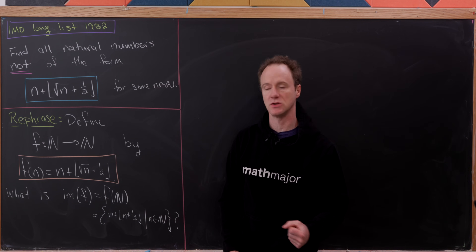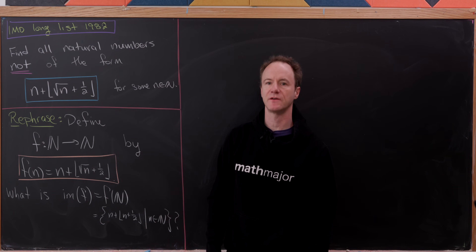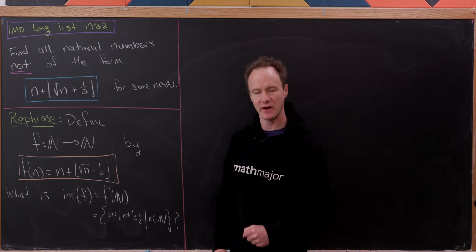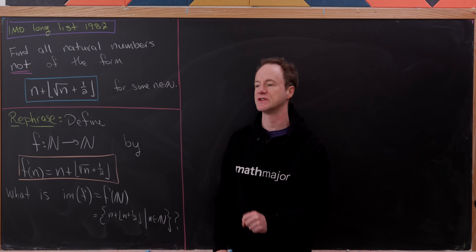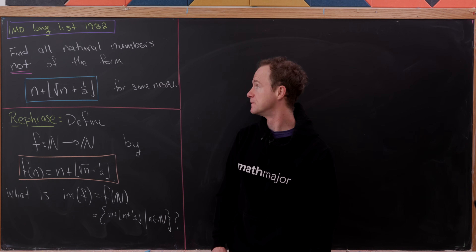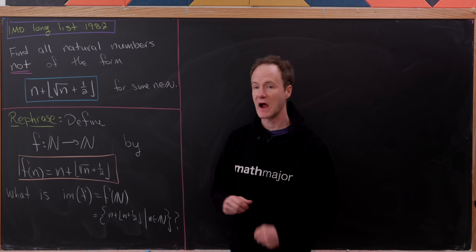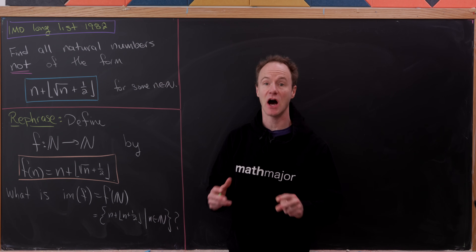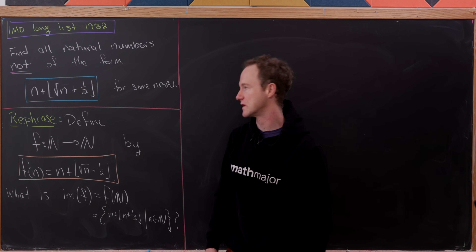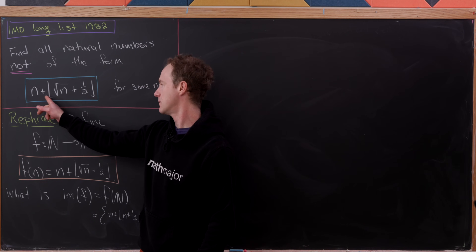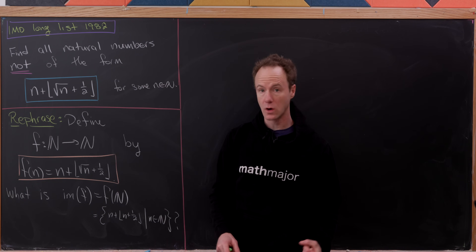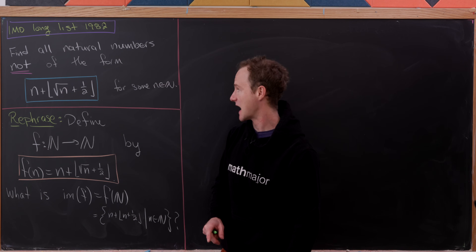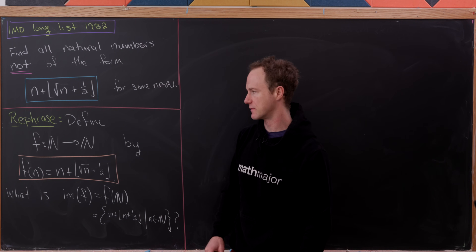Let's look at this nice problem that was long-listed for the International Math Olympiad in 1982, and it involves one of my favorite functions: the floor function. Our goal is to find all natural numbers that cannot be written in the form n plus the floor of the square root of n plus one half, for some natural number n.